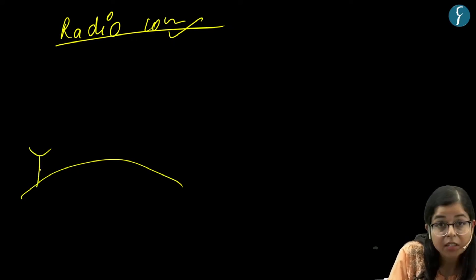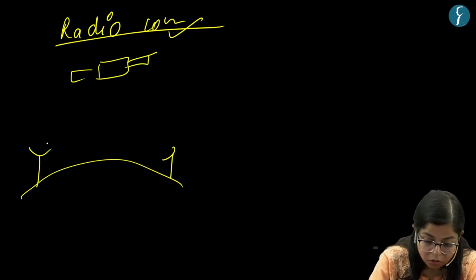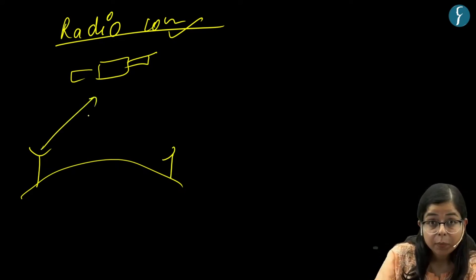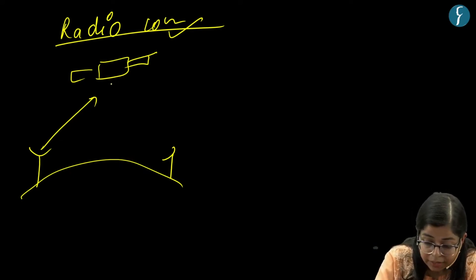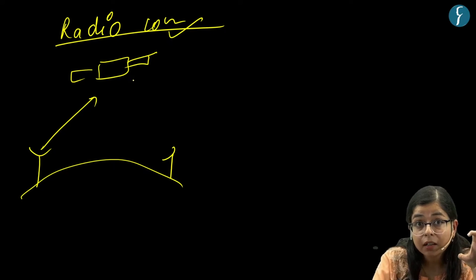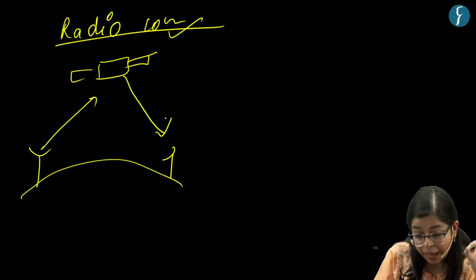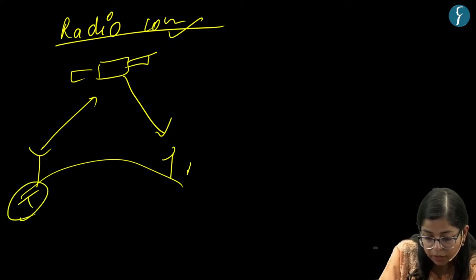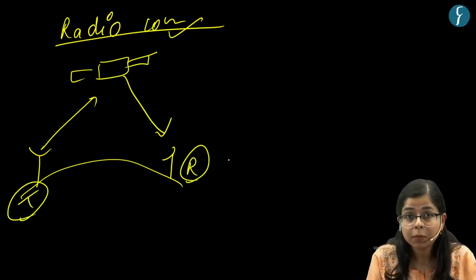Basically, there is a transmitter on the earth's surface, a satellite, and a receiver. Radio waves are transmitted to the satellite at a particular wavelength. The satellite processes the data, amplifies the signal, and then transmits the signal back to a receiver. This is how radio communication takes place between satellites.